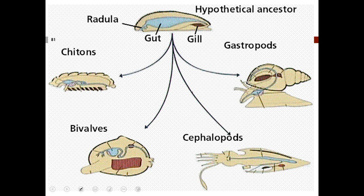From a common ancestor, the molluscs diversify into differing groups: the chitons, the gastropods from Gastropoda, the bivalves from Bivalvia, and the cephalopods from Cephalopoda — four of the eight recognized molluscan clades.